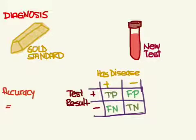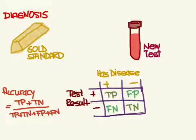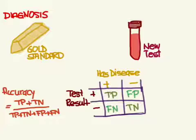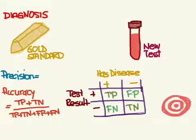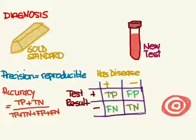The accuracy of the test is how often it's right over all possible cases. If it's right all the time there will be no false positives and no false negatives, giving you a 100% accurate test. Precision is how reproducible the test results are over time — each time you run the test on a sample you always get the same result on a precise test.